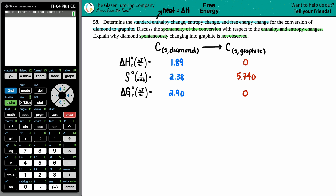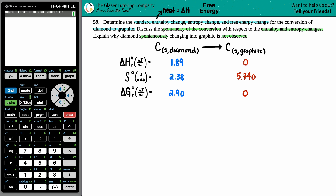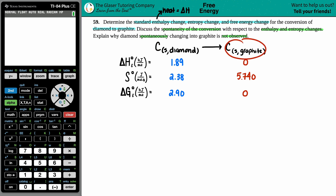To find the enthalpy change, we assume standard conditions and go to the back of the textbook to find the numbers given for diamond, which is just carbon, converting to graphite, which is also just carbon. Diamond is your reactant and graphite is your product. To put this in perspective, the diamond in an engagement ring is just tons and tons of one element — carbon.